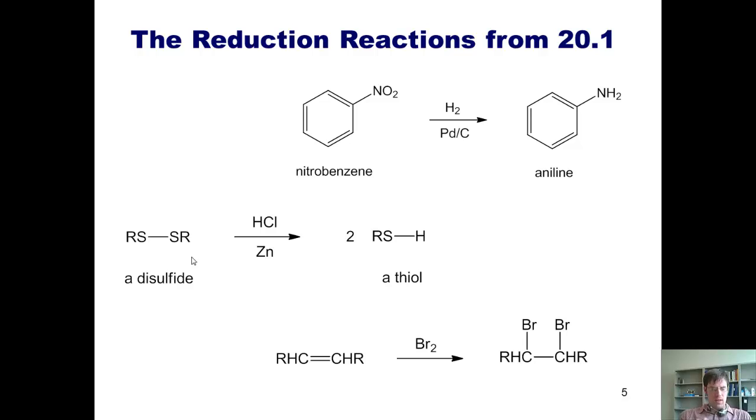This is another reaction we learned back in Chapter 4. If I take an alkene and treat it with bromine, I will add a single bromine atom to each of these two carbons. You might remember from Chapter 4 that these bromine atoms always end up adding anti to each other.